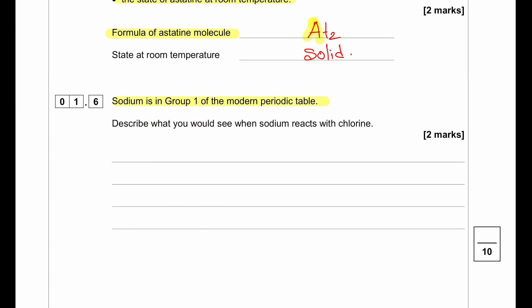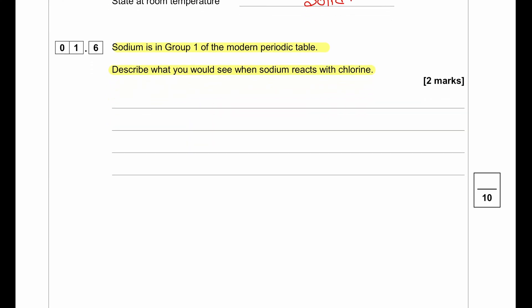Sodium is in group 1 of the modern periodic table. Describe what you would see when sodium reacts with chlorine. When sodium reacts with chlorine, sodium burns with a yellow flame. So we are going to see a flame. It's going to produce sodium chloride which is white solid. So we will see white solid being formed.